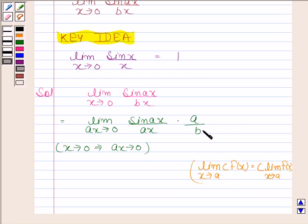Now here, a by b is a constant. So limit of this expression is equal to a by b times limit ax tends to 0 sin ax by ax.